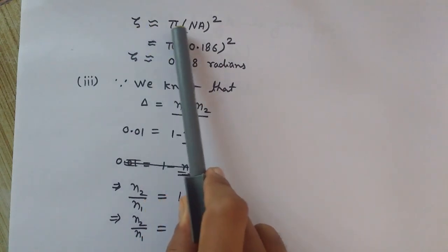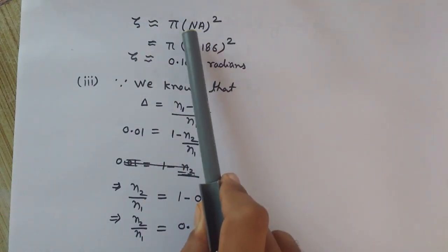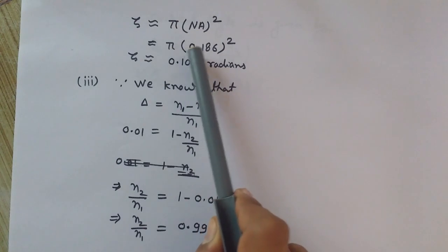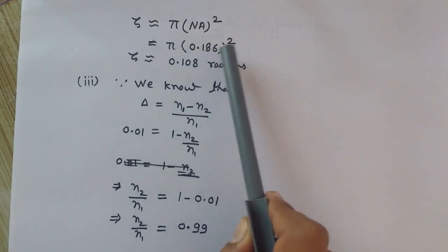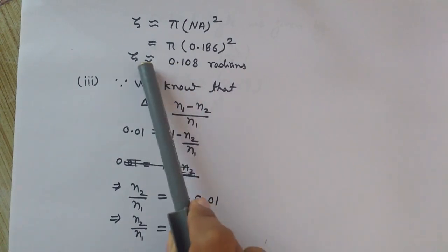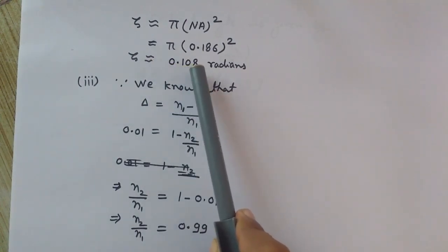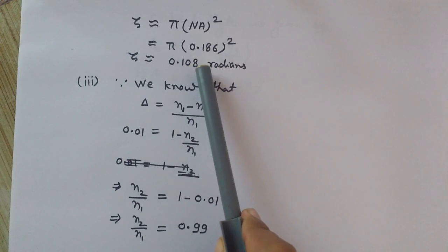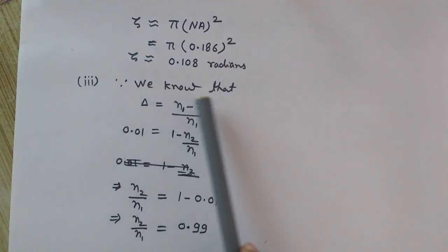The solid acceptance angle equals π × NA², and the numerical aperture we already calculated is 0.186. So the solid acceptance angle equals 0.108 radians.